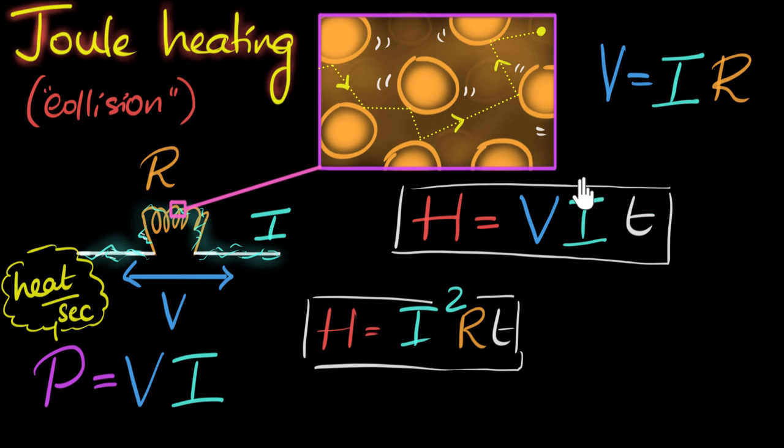And similarly, over here, we can substitute for I as V over R. In that case, what we would get is V over R, so V squared over R, times T. And this is a formula that tells us how much heat is generated in terms of voltage and resistance.